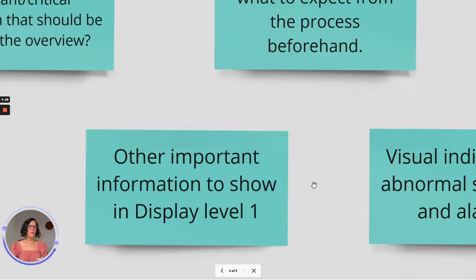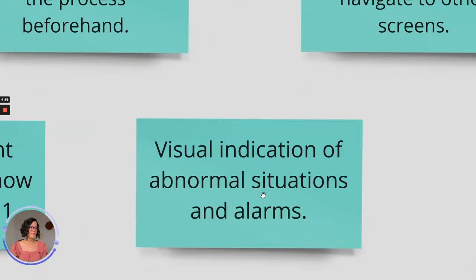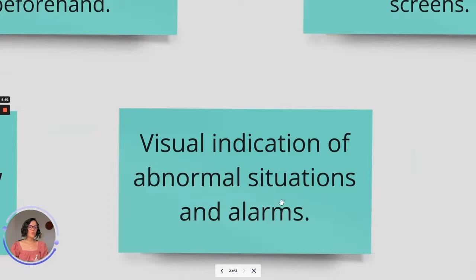Think about all the important information you want to show in Display Level 1 — for example, KPIs, trends, historical data, some video to explain something, images — whatever will give the operator a very good overview of how everything is going. You also want to provide visual indication of abnormal situations and alarms, of course.